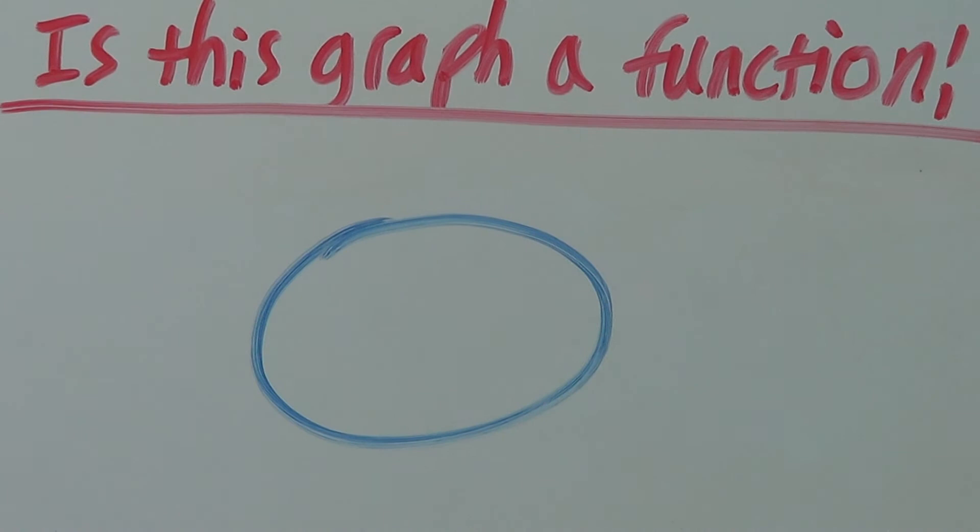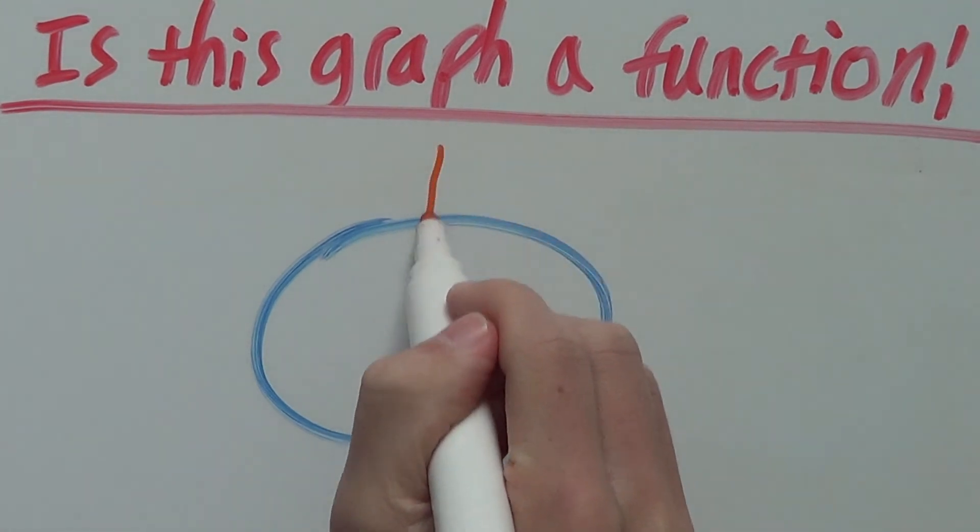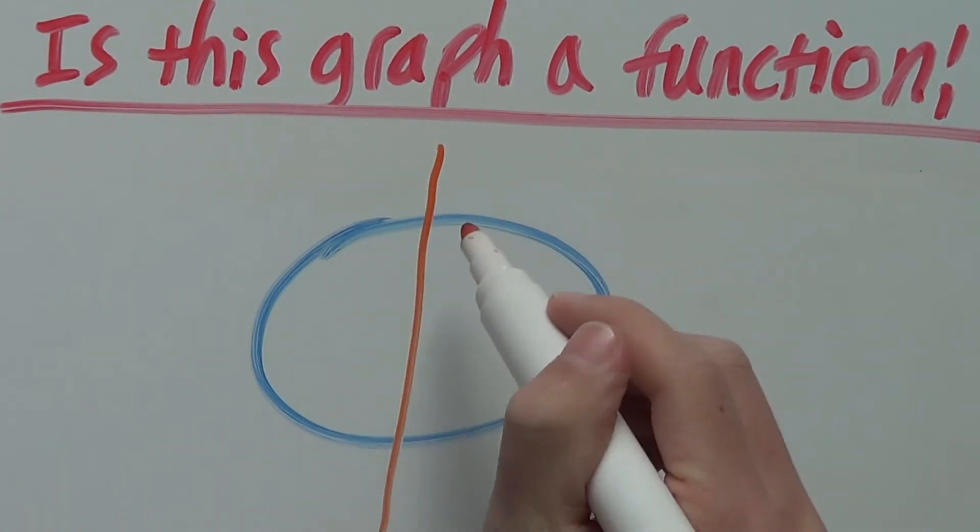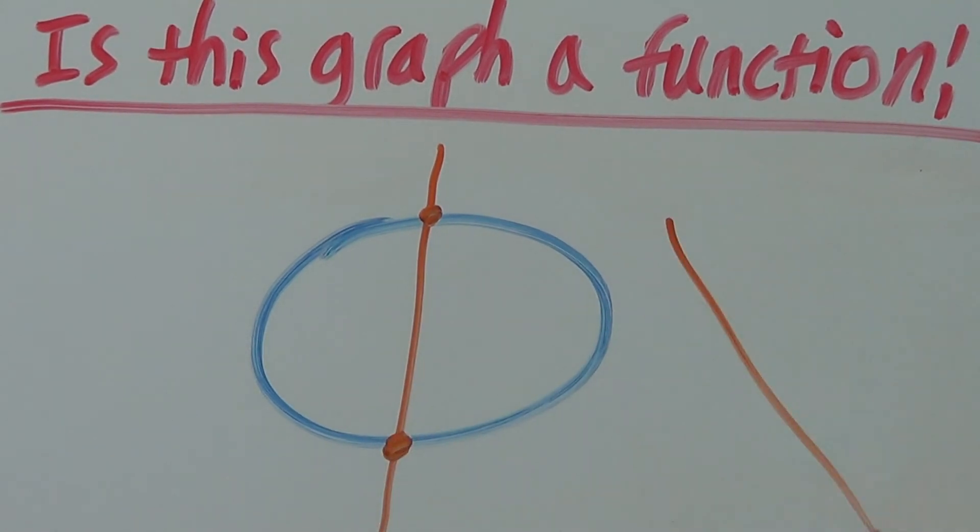And last but not least, we have this graph here and if we use the Vertical Line Test, we see there are two intersections meaning this graph is not a function.